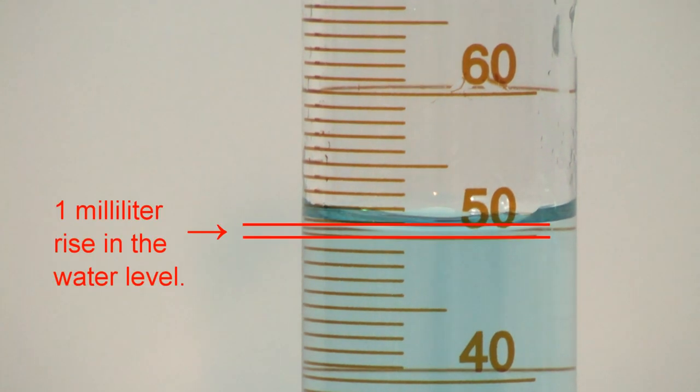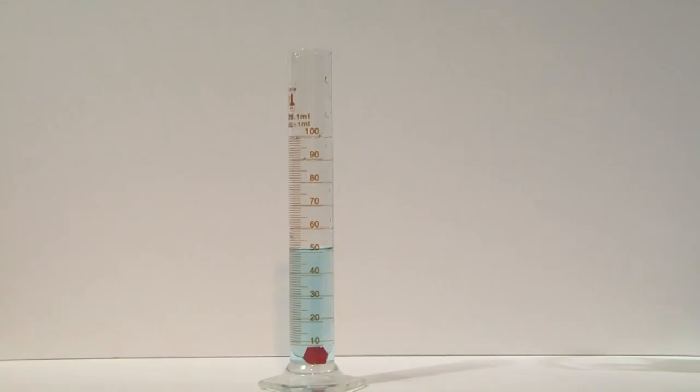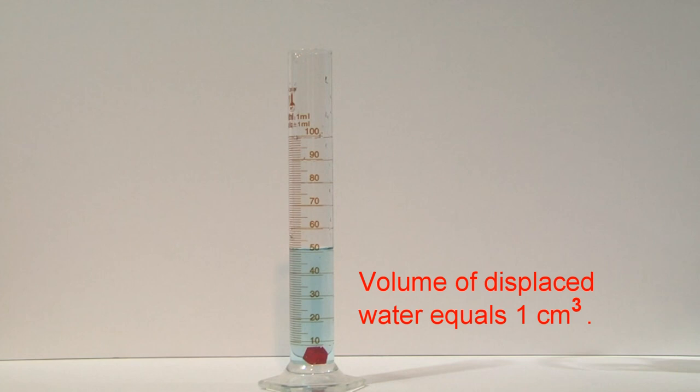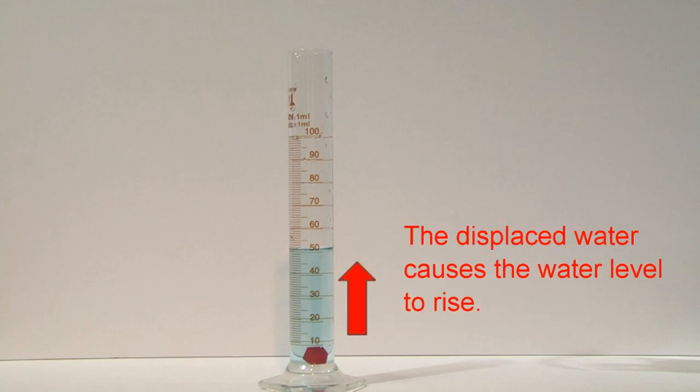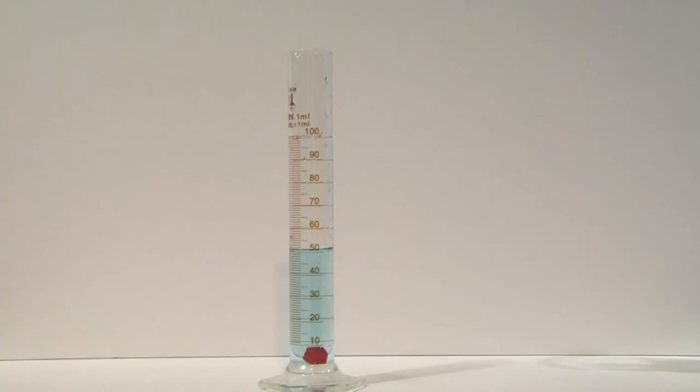Note that the water level has risen exactly one milliliter. The one cubic centimeter red block takes up the space of one cubic centimeter. Therefore, the water that was in that space has to move, and we call it the displaced water. This volume of water has to move upward in the graduated cylinder. So if we measure the rise of the water, we are measuring the volume of the displaced water, which has to equal the volume of the red cube.